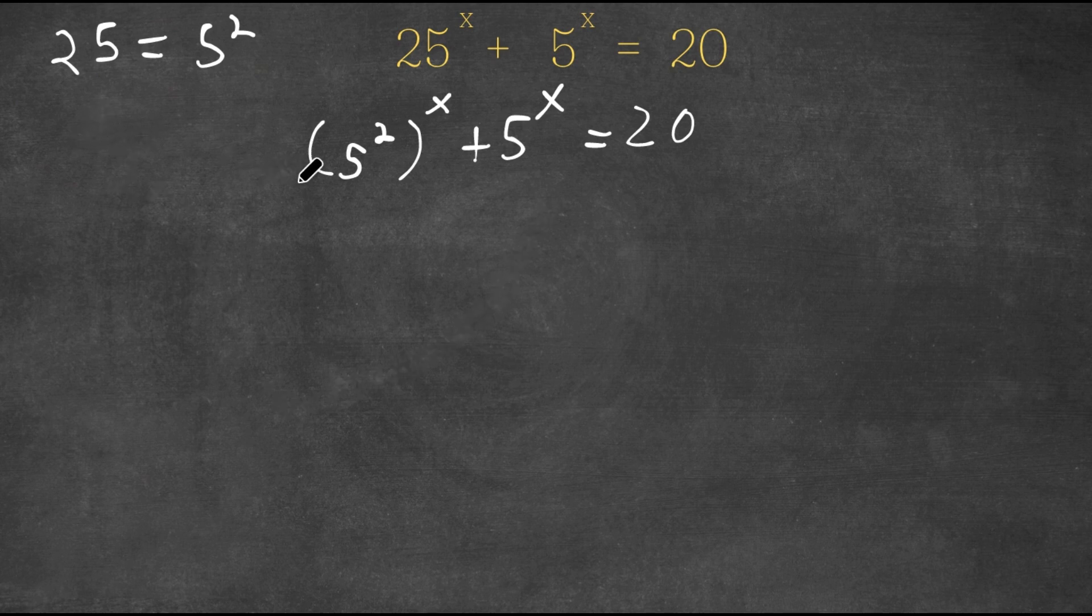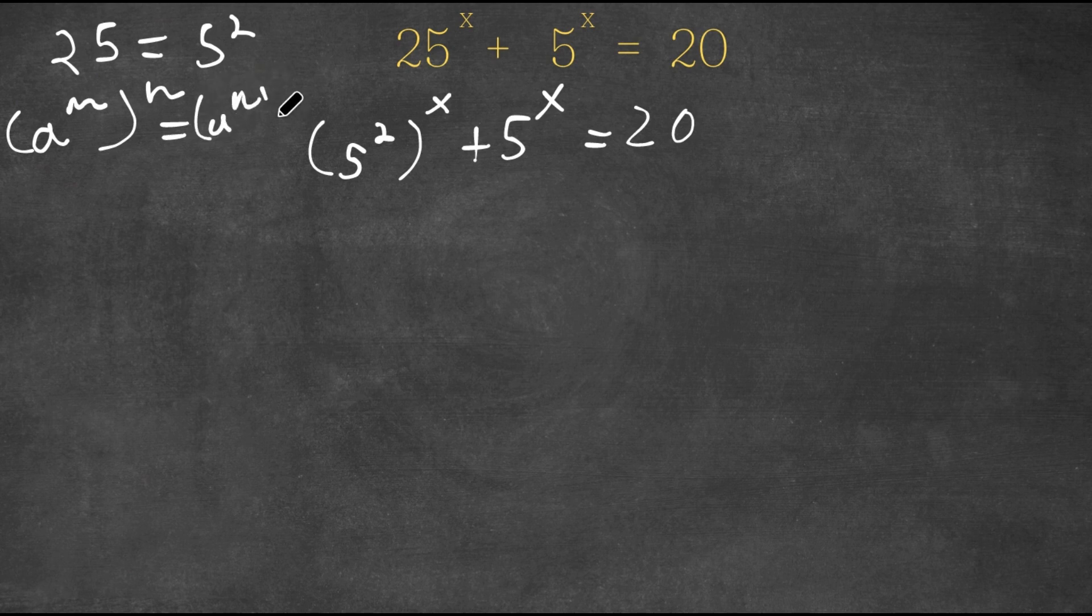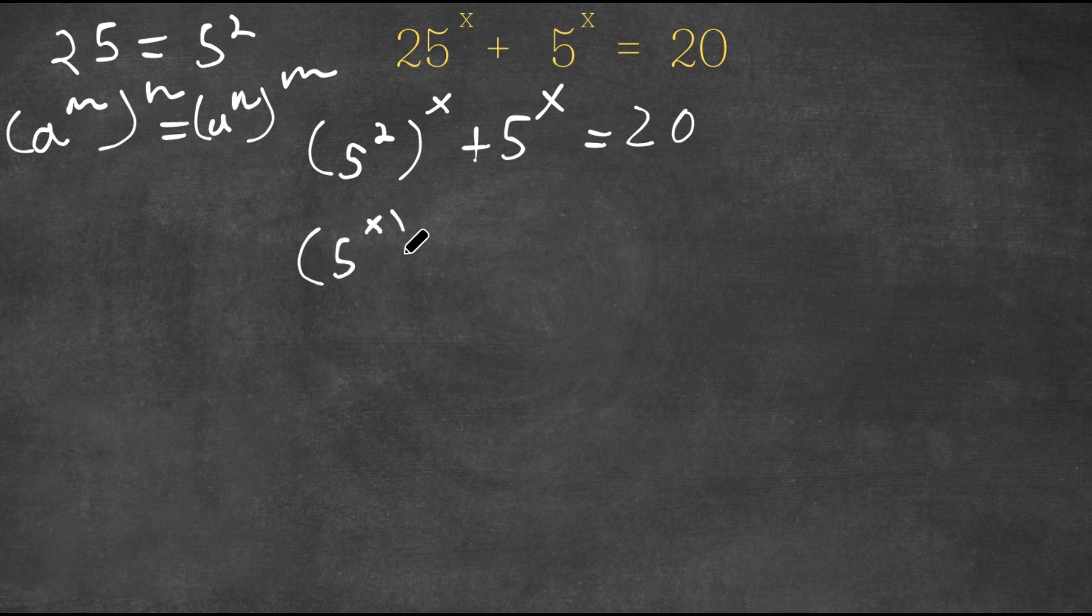Now if we have something in the form a to the power of m to the power of n, this is the same thing as a to the power of m times n. So 5 to the power of 2 to the power of x, this is the same thing as 5 to the power of x to the power of 2.